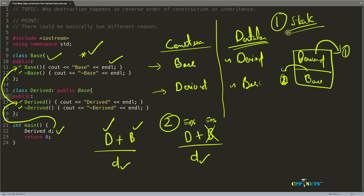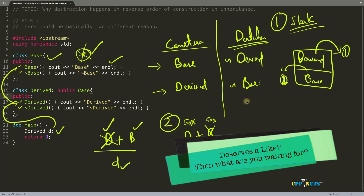So to summarize: the first reason is the stack — base and derived are created on the stack, so destruction follows LIFO order. The second reason is that derived is a half type and becomes complete only when base is present, so removing base first leaves derived inconsistent. The third reason is the pointer example — resources created in base and used in derived must be cleaned up in derived first. If you like the video, hit the like button and subscribe for upcoming videos. Thanks for watching, bye bye.